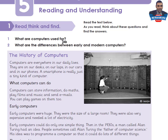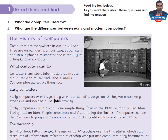Question one: what are computers used for? You can find the answer in the 'What Computers Can Do' section. Computers can store information, do maths, play films and music, and send emails. You can play games on them too. Question two: what are the differences between early and modern computers? Early computers were huge — the size of a large room, very expensive, and needed a lot of electricity. Also, early computers didn't have a mouse; they had only a keyboard, and you could not delete mistakes.